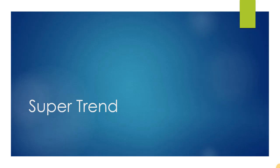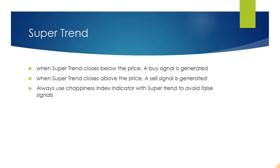Since it changes its position from above to below price action and back, it adds the feature of parabolic SAR. The buy and sell signal changes as the indicator flips over the closing price. When the Supertrend closes below the price a buy signal is generated, and when it closes above the price a sell signal is generated.